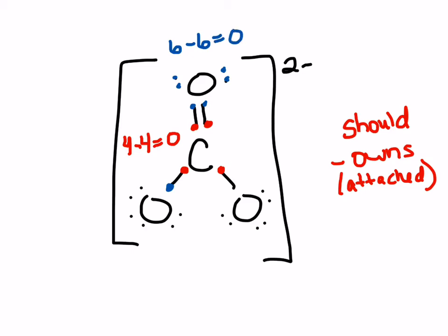Let's look at the oxygens on the bottom. Each oxygen should own six. Counting what I gave it: one, two, three, four, five, six, seven. This oxygen has a formal charge of minus one. The same for the other bottom oxygen — it should have six, it has seven, so it also has a minus one.